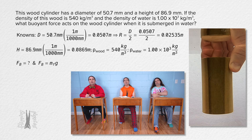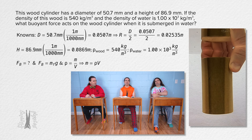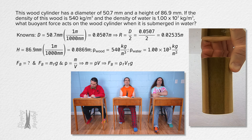So we need to use the density equation. Density equals mass over volume. We can rearrange that to get mass equals density times volume. So the buoyant force equals the density of the fluid displaced times the volume of the fluid displaced times the gravitational field.